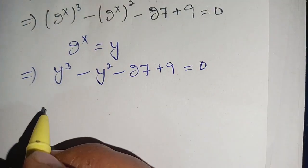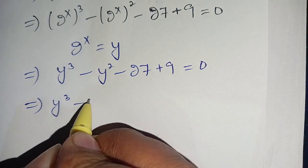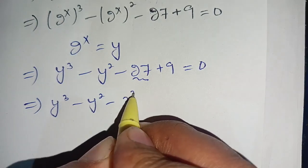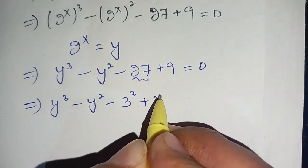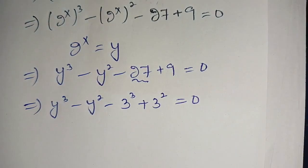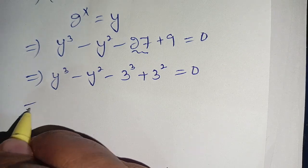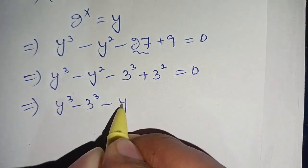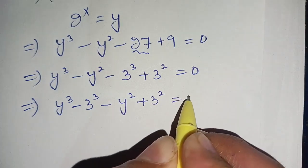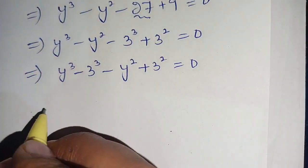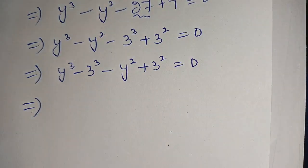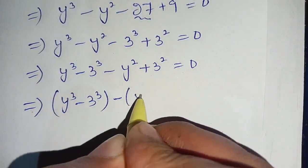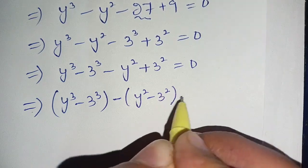In the next step we can write it as y cubed minus y squared minus 27 plus 9, where 27 can be written as 3 cubed and 9 can be written as 3 squared. So we have y cubed minus 3 cubed minus y squared plus 3 squared is equal to 0.